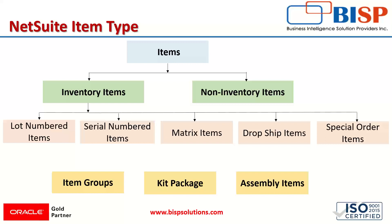There are various kinds of item types used in NetSuite. They have been divided into two categories: the first is the inventory item, and the other is the non-inventory item.